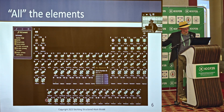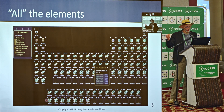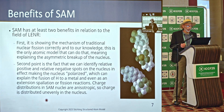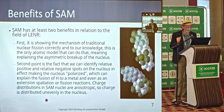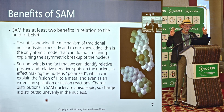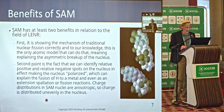Looking at the elements spread out through the periodic table with all the defined structures, we can see the benefits of SAM. SAM has at least two benefits in relation to the field of LENR. First, it shows the mechanism of traditional nuclear fission correctly — and to our knowledge, it is the only atomic model that can do that, meaning it explains the asymmetric breakup of the nucleus. The second point is that we can identify relatively positive and relatively negative spots on the nucleus, effectively making the nucleus polarized, somewhat similar to water. This can explain the fusion of hydrogen to a metal, and even spallation or fission reactions. Charge distributions in SAM nuclei are anisotropic — charge is distributed unevenly in the nucleus.